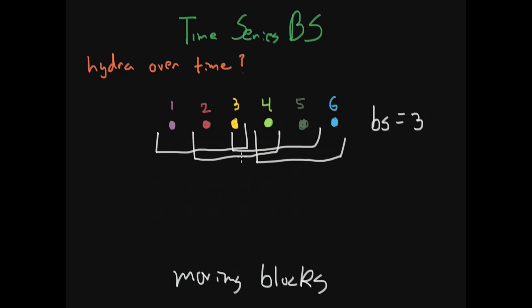And we sample from these data points independently. So we go ahead and we do sampling with replacement. So for example, we might get the first block and we might also get the second block.